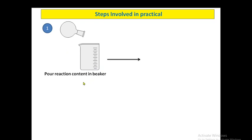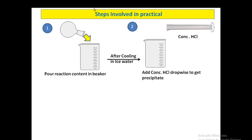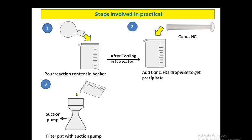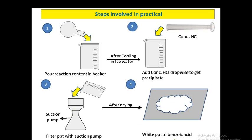All the reaction content is now poured into a beaker. After cooling in ice water, add concentrated HCl into the solution — you will get the precipitate of benzoic acid. Then filter the whole precipitate at the suction pump. Here is the suction pump — you filter all the precipitate and you will get the white precipitate of benzoic acid after drying.